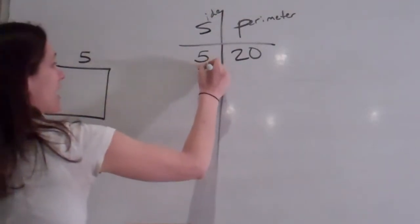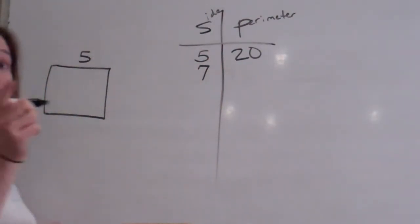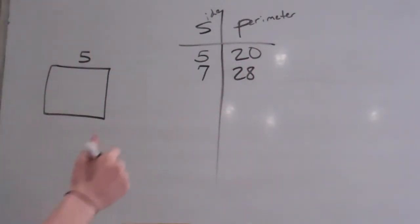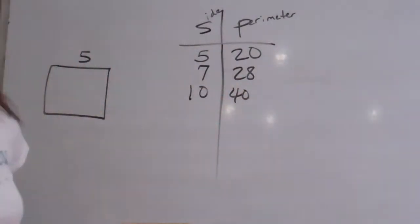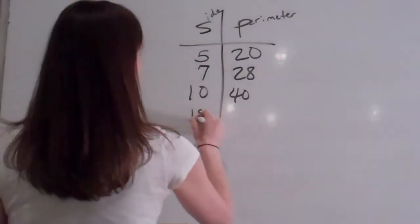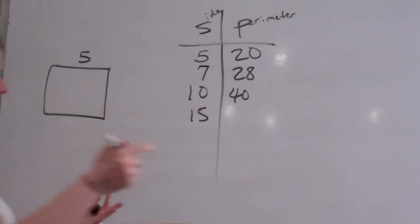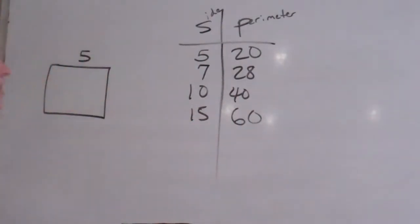If my sides are seven, what's my perimeter? Seven times four. 28. Very good. And what if it's 10? 40. And last one? 15. Wait, 60. 60. Very good.